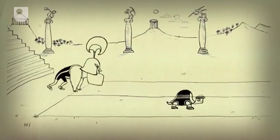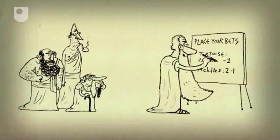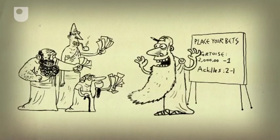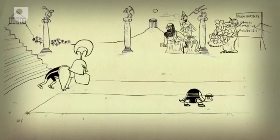First the tortoise is given a slight head start. Anyone fancying a flutter would still rush to put their money on Achilles, but Zeno pointed out that, to overtake him, Achilles would first have to cover the distance to the point where the tortoise began.